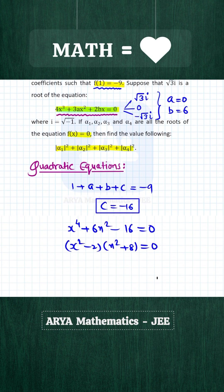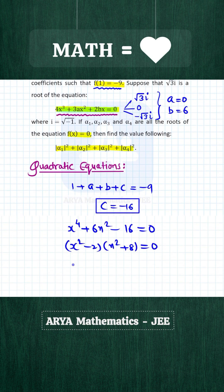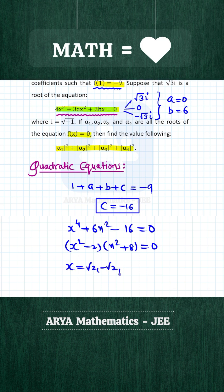From here, we will get the value of x. x² - 2 = 0, so that means x will be √2 and -√2. Similarly, x² + 8 = 0.